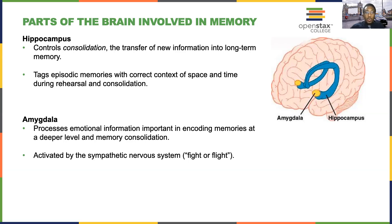The amygdala is also activated by the sympathetic nervous system — our fight-or-flight system. So under periods of high stress, it interacts with the hippocampus, and we'll talk about that a little bit more in a moment.